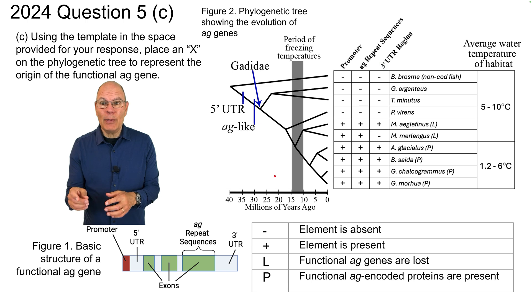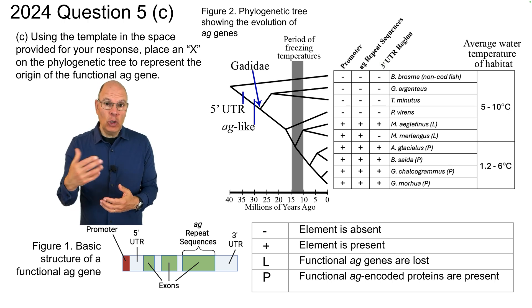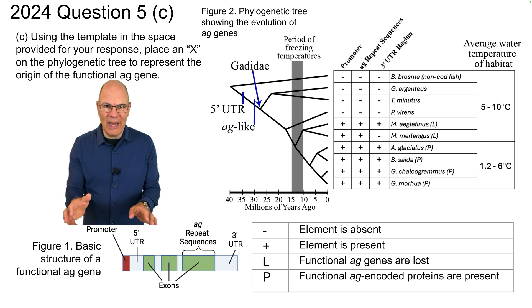Question 5c. Using the template in the space provided for your response, place an X on the phylogenetic tree to represent the origin of the functional AG gene. You have your downloaded FRQ. Go ahead and make that mark and then hit play to see whether your mark is the same as mine.